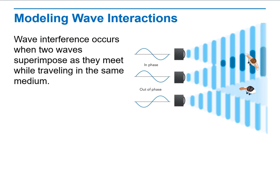When I talk about modeling wave interactions, we have in phase, we have out of phase. Wave interference occurs when two waves superimpose as they meet while traveling in the same medium.